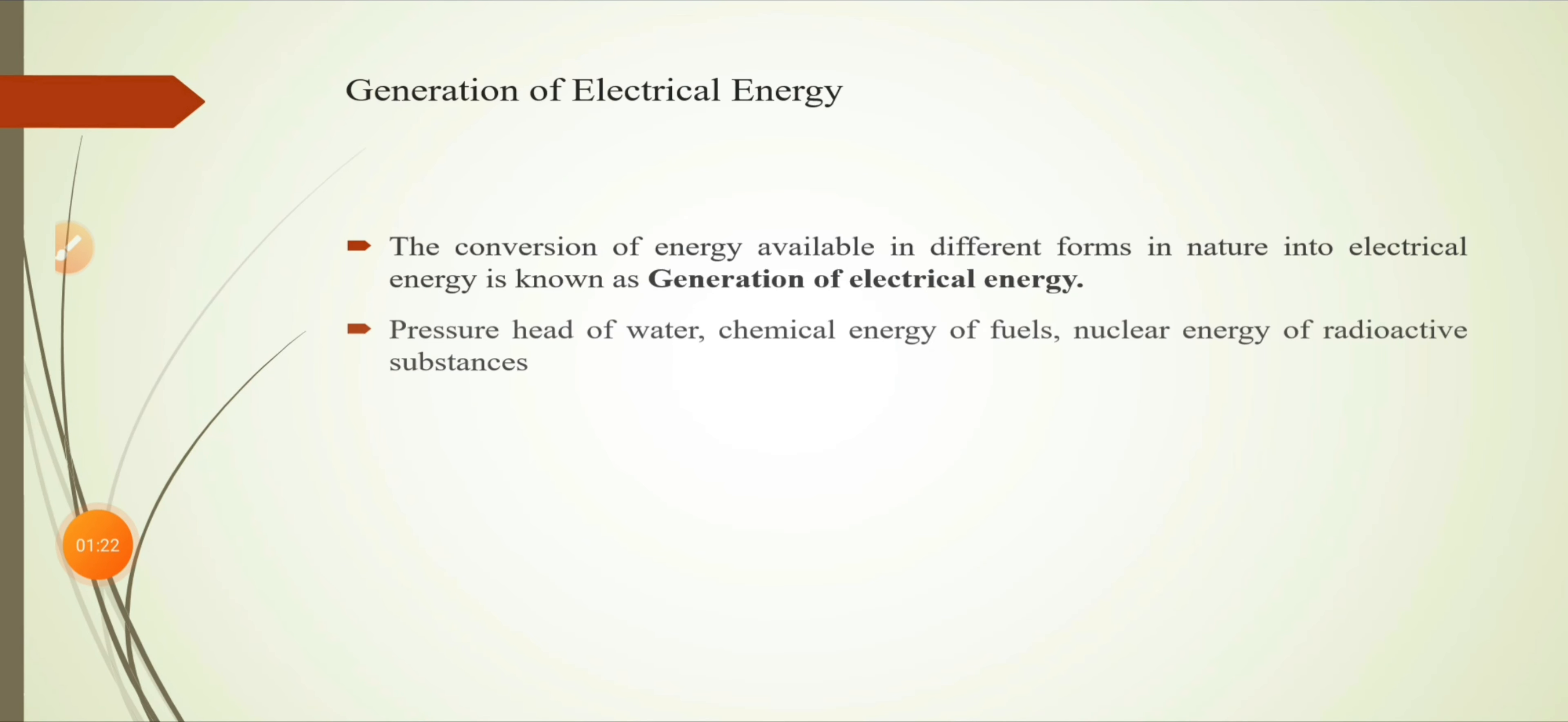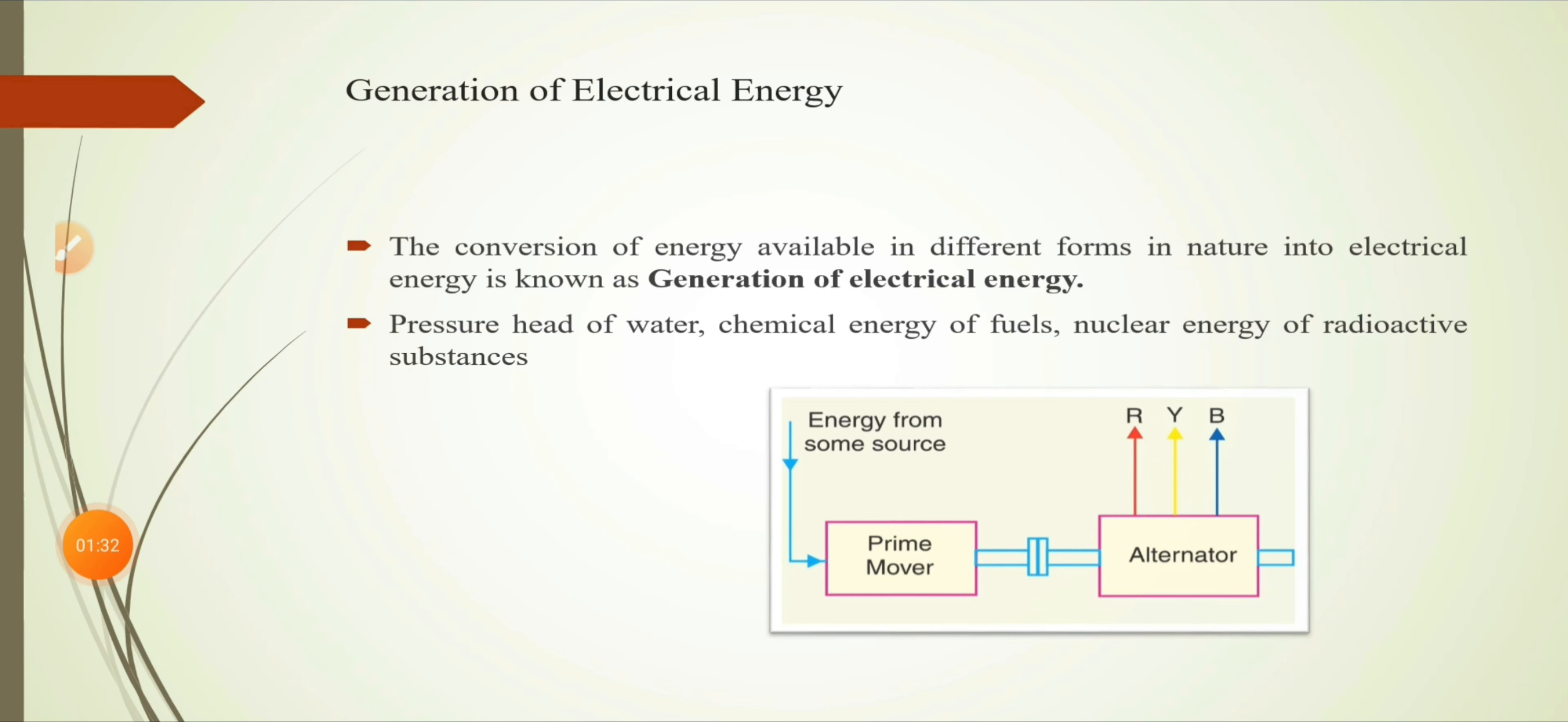So friends, let's get to the topic which is generation of electrical energy. We all know energy exists in different forms in nature and it's never wasted, but it gets converted from one form to another. This conversion of energy which is available in nature into electrical energy is called generation of electrical energy. It could be potential energy of water, fuels, chemical energy, or radioactive substances. As you can see in the picture, it shows that for generation of electrical energy it's essential to employ the necessary equipment.